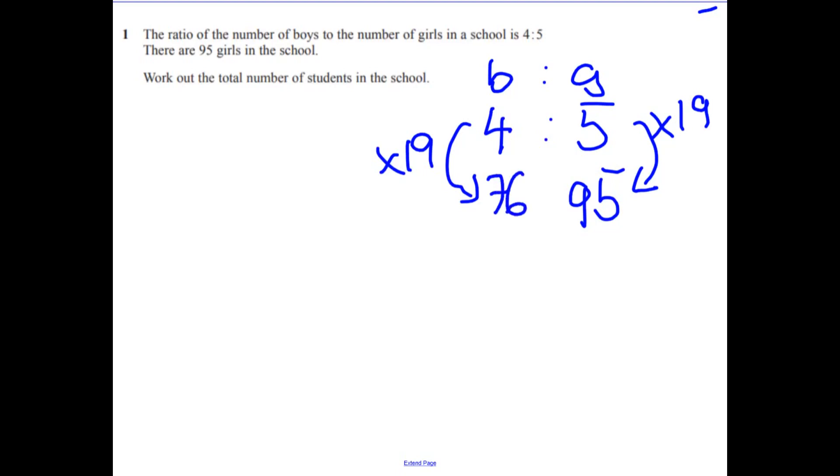And then to work out the total number of students, we're just going to add those together. So 76 and 95 is 171.